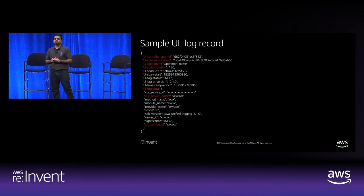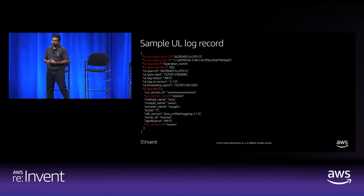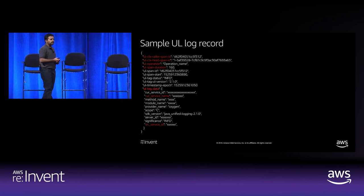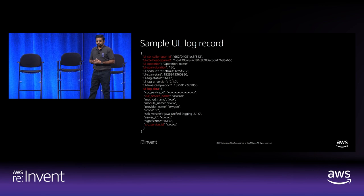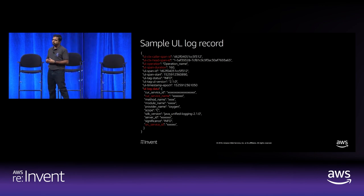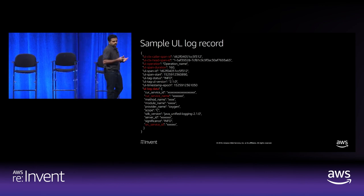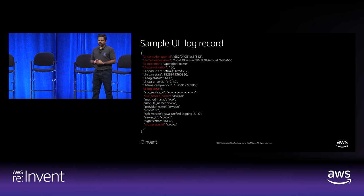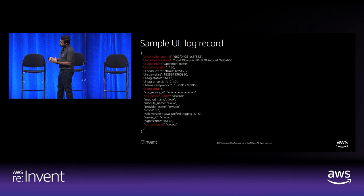This is a sample UL log record — it's essentially a JSON record. Two important fields to highlight: the UL operation field, which signifies the name of the operation the service is performing — it can be an API name — and the UL span duration field, which is how much time it took for the service to perform that operation.